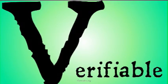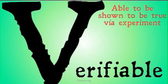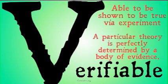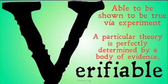Before we get started, let's talk about what we're going to mean by 'verifiable,' because there seem to be some different definitions floating around. For this, we're going to say something is verifiable if and only if it is able to be shown to be true via experiment. In other words, using the terminology we've been using for this series, a particular theory is perfectly determined by the body of evidence — only one theory is determined by it.